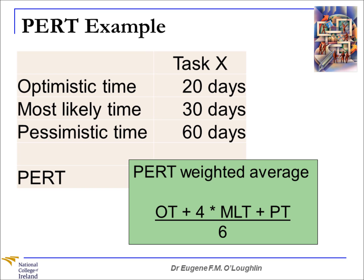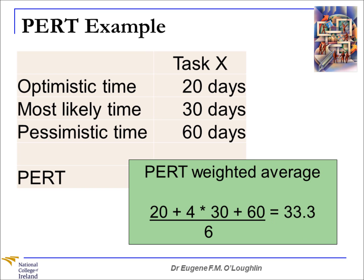So we're going to apply the PERT weighted average formula using these data. We take the optimistic time of 20, add that to four times the most likely time of 30, then add the pessimistic time of 60, and divide it all by six. That gives us a total PERT weighted average figure of 33.3 days.